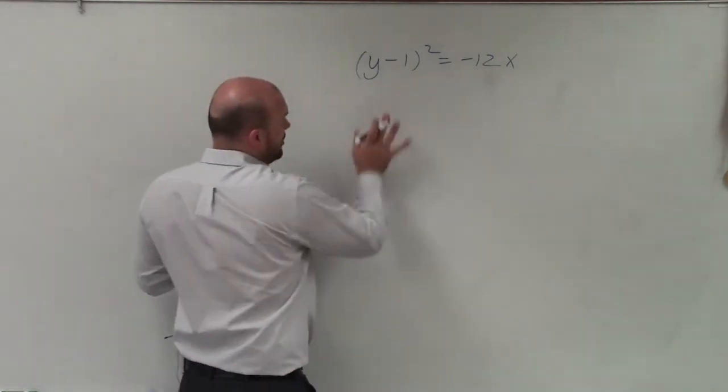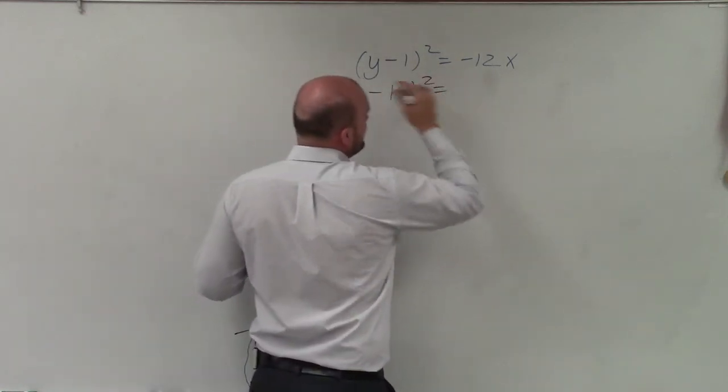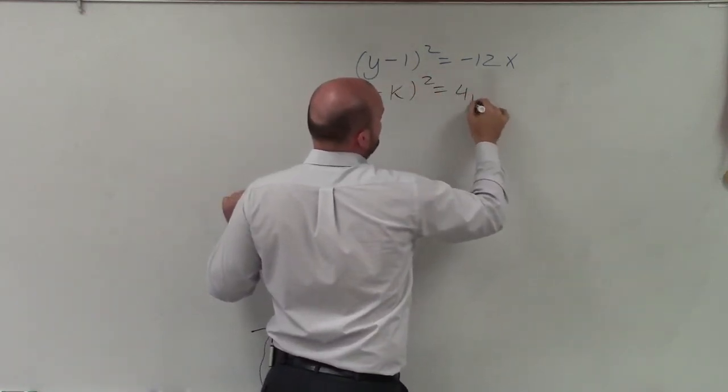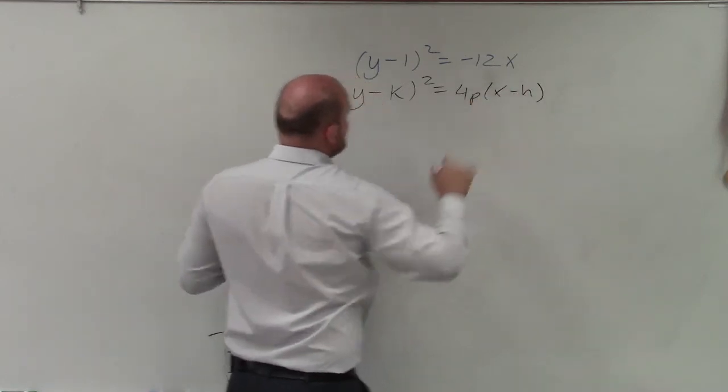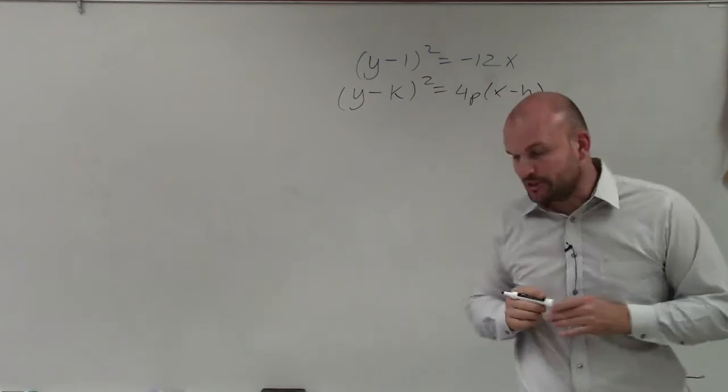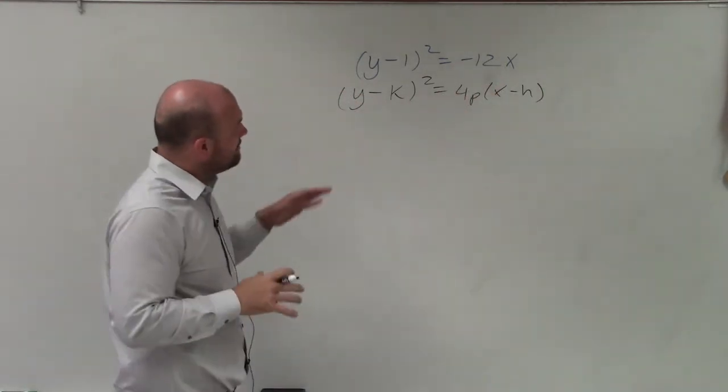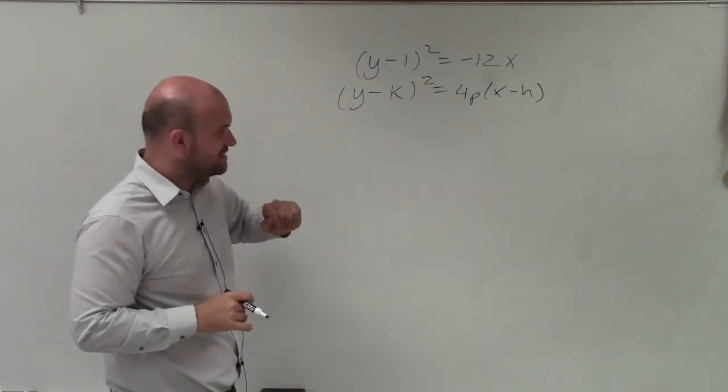And that also helps us - when we have y squared, we know that the equation of that parabola is going to be in this format. So this is the equation for a parabola when we have a horizontal axis of symmetry. You can see that right there.